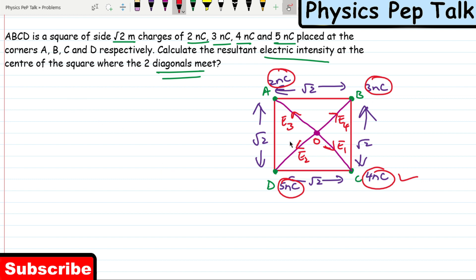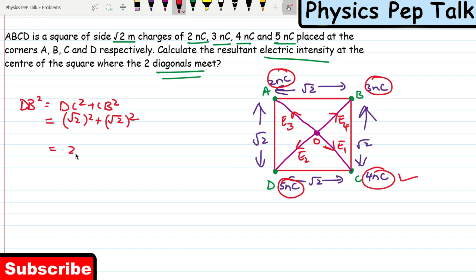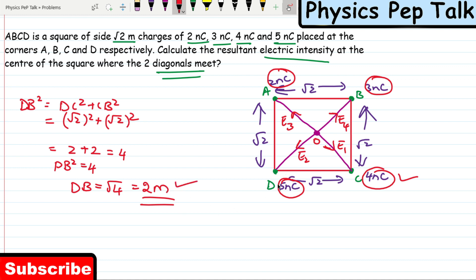First, we determine the length of the diagonal. DB squared equals DC squared plus CB squared (right angle triangle DCB). DC is root 2 and CB is root 2, so DB squared equals root 2 squared plus root 2 squared equals 2 plus 2 equals 4. Therefore DB equals root 4 equals 2 meters. The total diagonal length is 2 meters, so OA equals OB equals OC equals OD equals half the diagonal, which is 2 by 2 equals 1 meter.